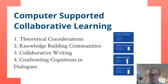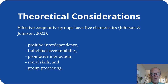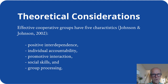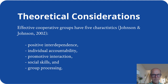First, some theoretical considerations. This is already old material — I hope you remember that we discussed the work by Johnson & Johnson in the module on learning as a social process. Johnson & Johnson distinguished five characteristics of effective cooperative groups. I bring them back to activate them so we can use them for the following discussions.